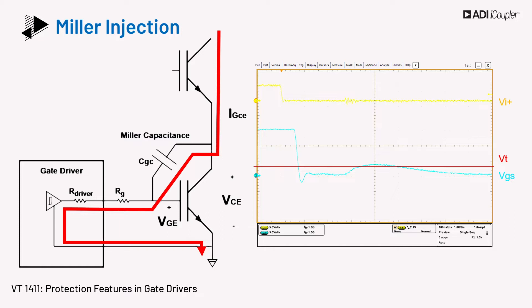If the threshold voltage of the power switch is exceeded, there could be a parasitic turn-on of the low side device, causing shoot-through and possible damage.